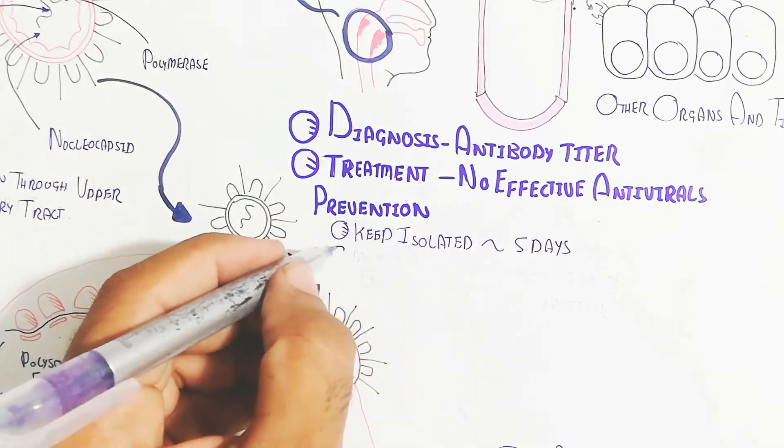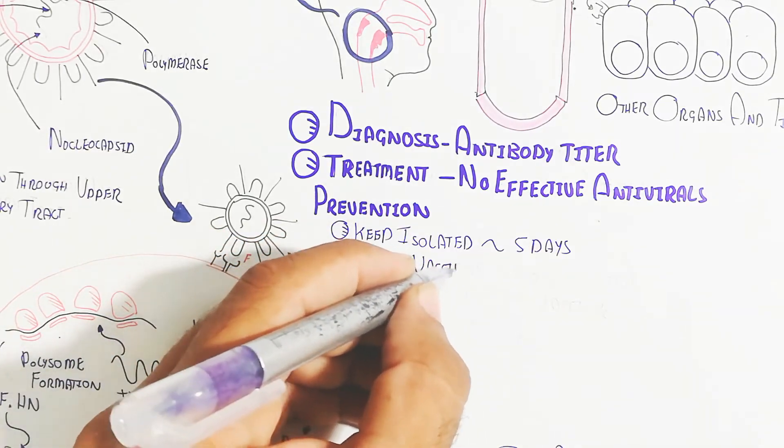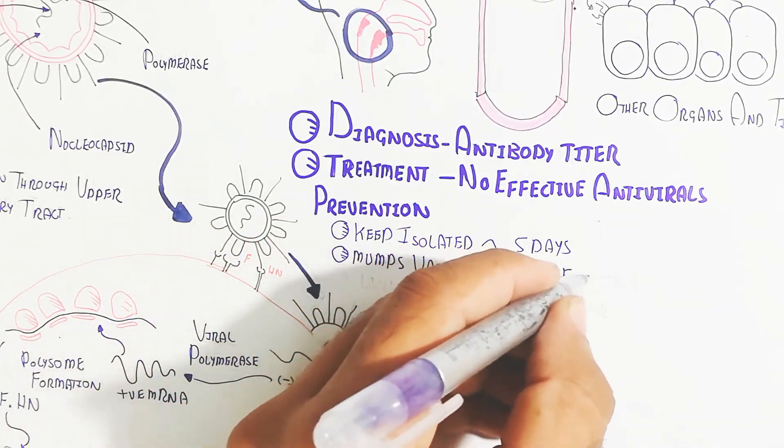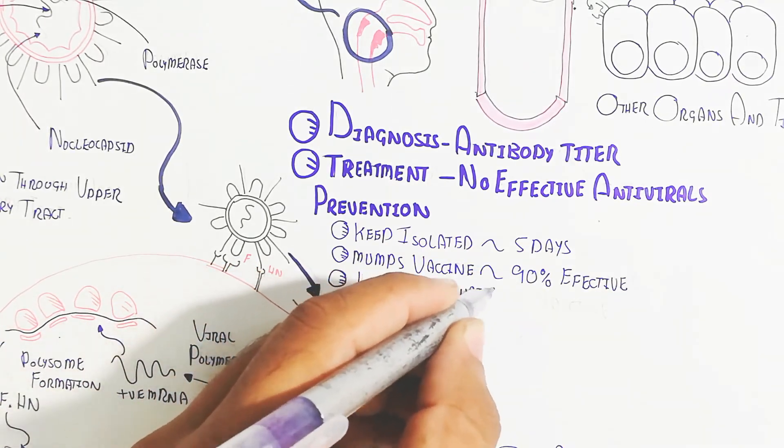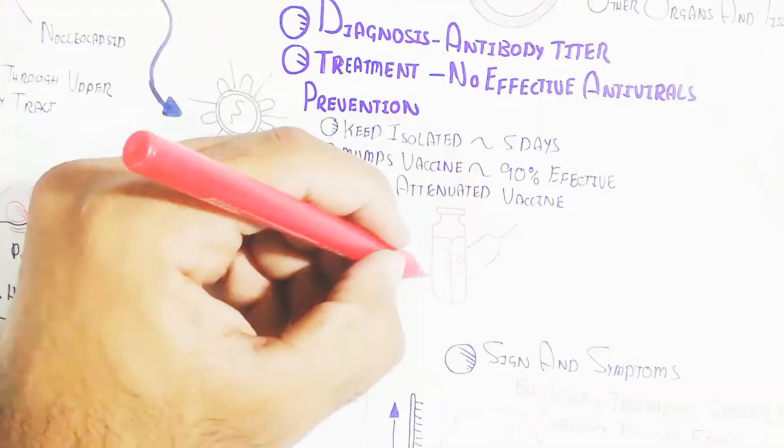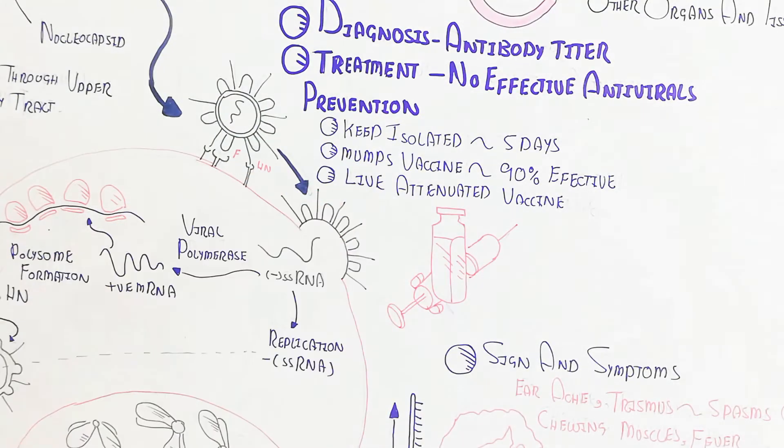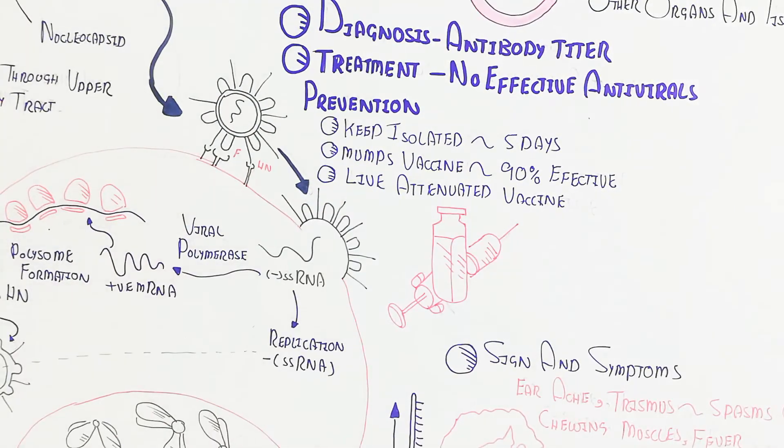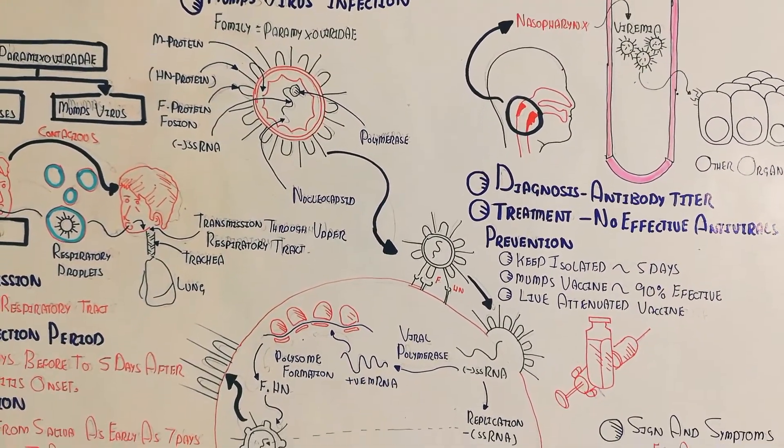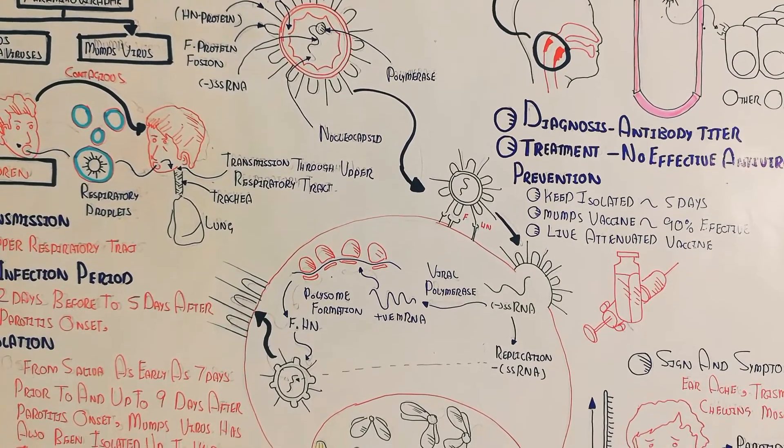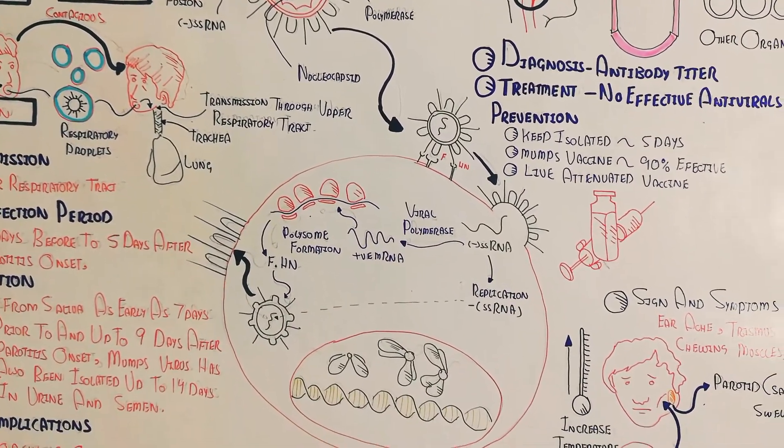After the infection, keep isolated for 5 days. Mumps vaccine before the infection will lead to 90% effectiveness. Live attenuated vaccine means the inactive or weak pathogen containing vaccine can be introduced to enhance the immunity for prevention of mumps virus infection.